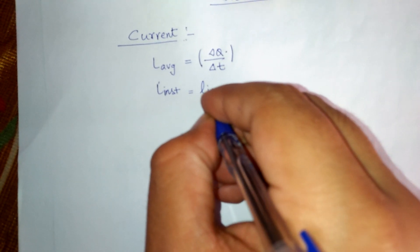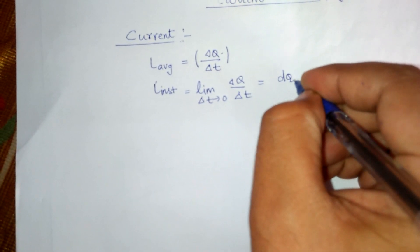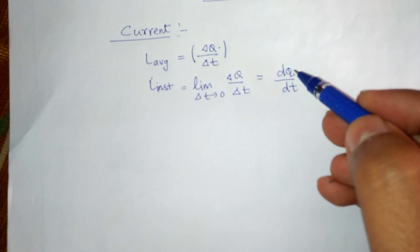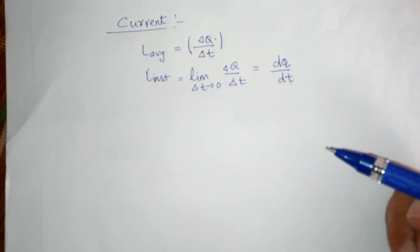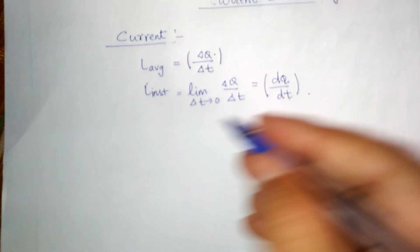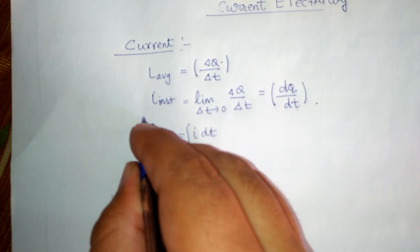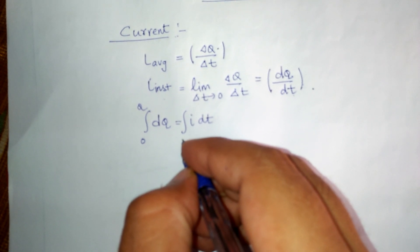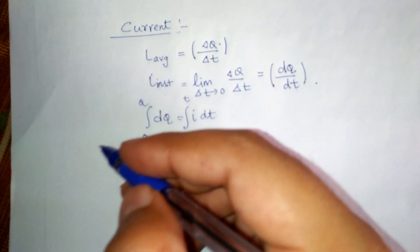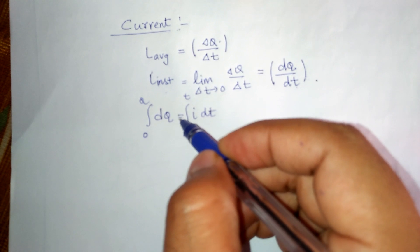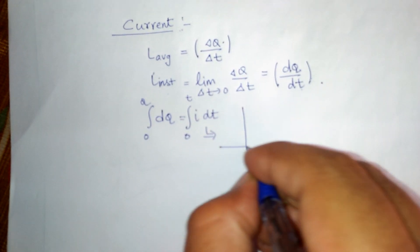For instantaneous current, if limit delta t tends to 0 of delta q upon delta t, that will be our dq by dt, and that we call the rate of flow of charge with respect to time — that is our instantaneous current. From here we can also say that dq is equal to i dt, and if you integrate this, we will get the net flow of charge. If we know the current as a function of time, then for a particular time t we can calculate what the net flow of charge has been.